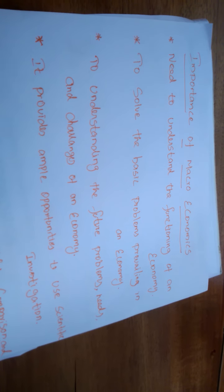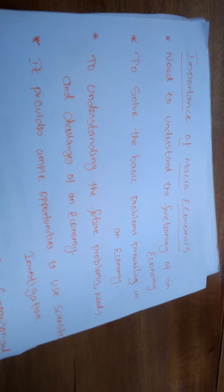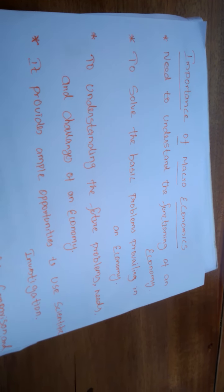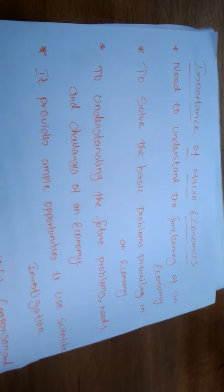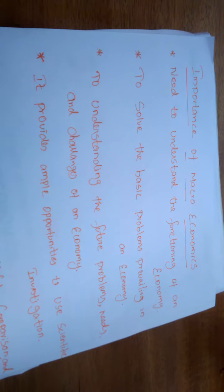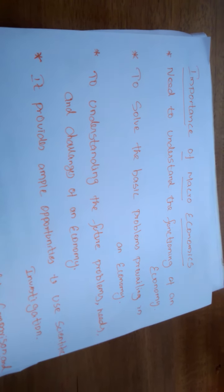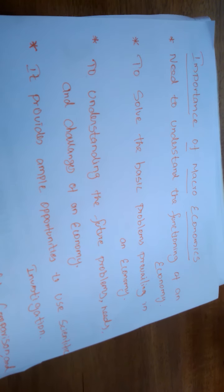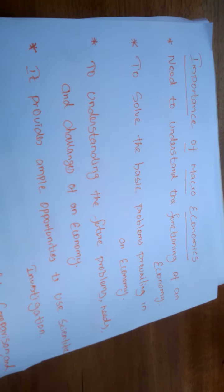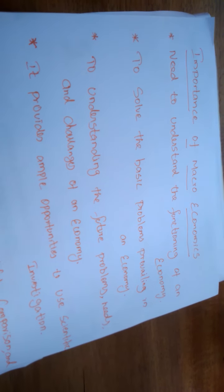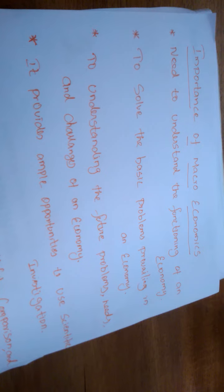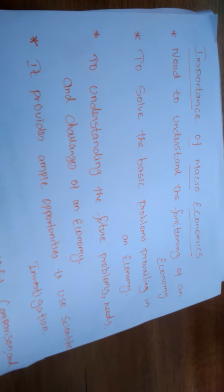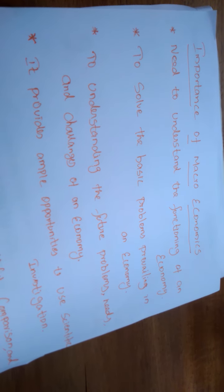'What to produce' — every society must decide on what goods it will produce and how much. What kind of product the nation has to produce — agricultural products or industrial products? If the nation has more need of industrial goods, the government must promote the industrial sector; otherwise, it will establish more agricultural or agro-based sectors.